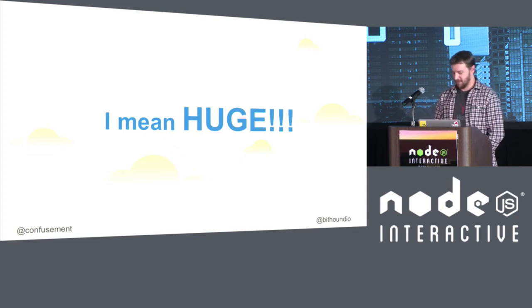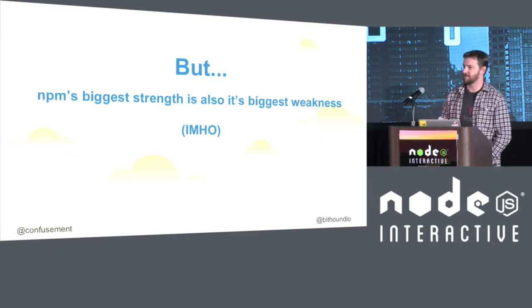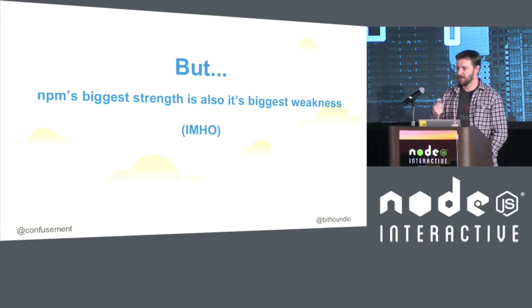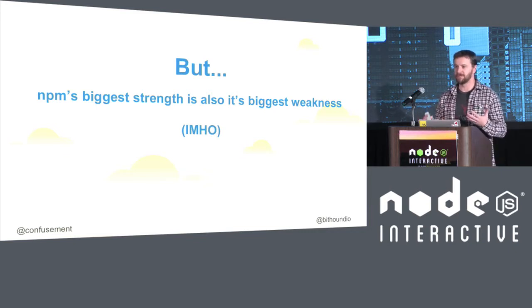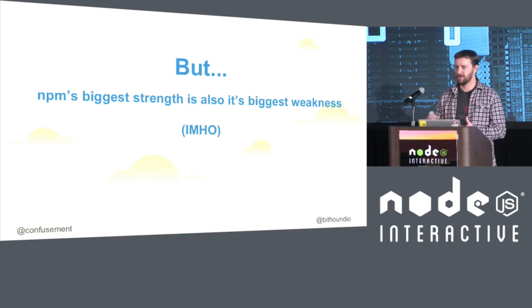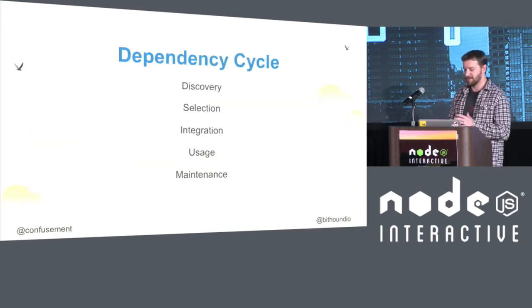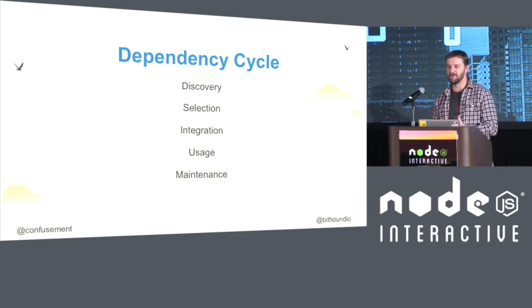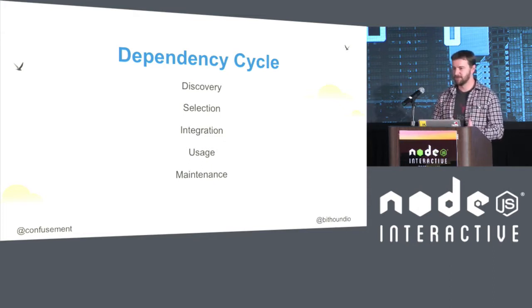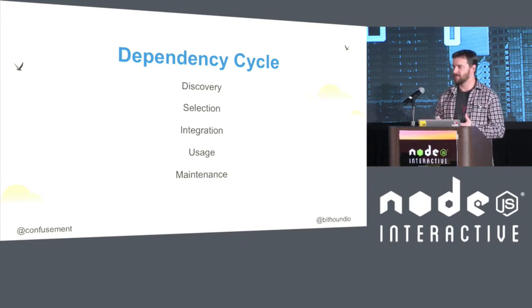That's really, really big — huge. But I think that NPM's biggest strength is also potentially its biggest weakness. NPM is great in that we can publish a module without any real effort. Anyone can get into the game, write a piece of code that's hopefully useful and publish it, and there aren't a lot of gates that prevent us from publishing code. Once the code is out there, it's up to us as a community and as individual developers to find what we need and use it. The dependency cycle, as I see it, starts with discovery — where we need something and would rather not write it ourselves — then selection, integration, figuring out usage, and then a maintenance mode of making sure we continue to use it correctly.